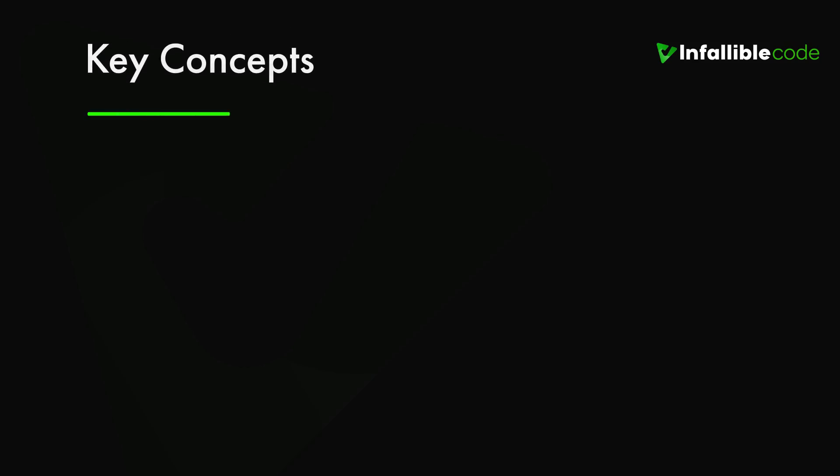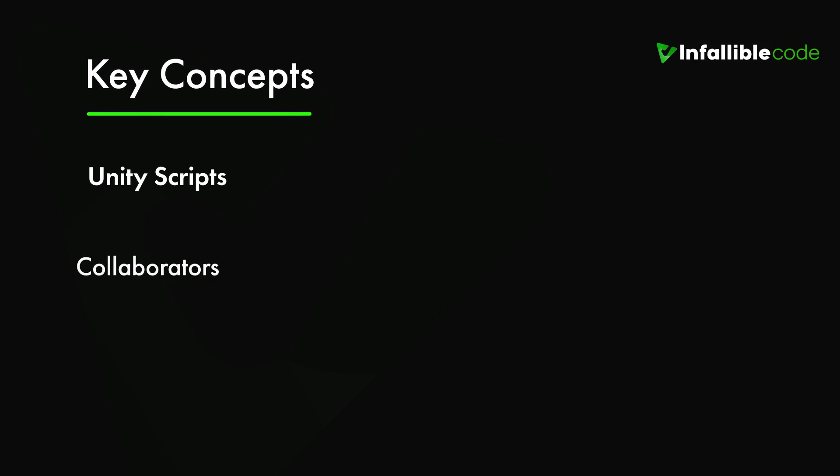That's why I struggled for so long with the problem of how to access variables in another Unity script. I just wanted one technique I could apply everywhere, but the reality is that there is no standard way of referencing other Unity scripts. Instead there are a bunch of techniques available to accomplish this goal, and I'm going to share some of them with you now. But first let's go over a few key concepts: Unity scripts, collaborators, and dependencies.